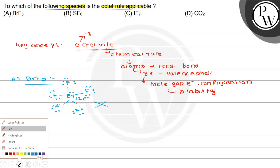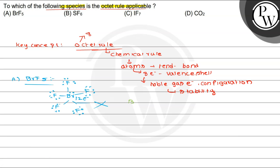Coming to the next option, SF6. When we see the structure of SF6, all the fluorine atoms have 8 electrons around them and obey the octet configuration. But when we count the electrons around sulfur, it has 12 electrons — so sulfur does not obey the octet rule, and SF6 is eliminated.